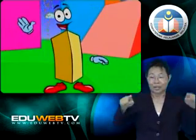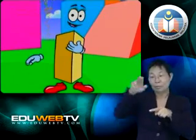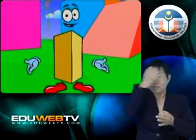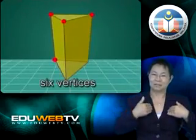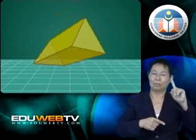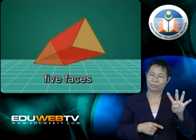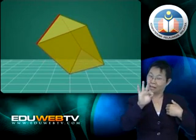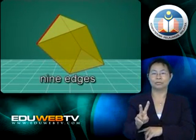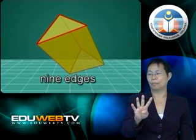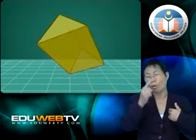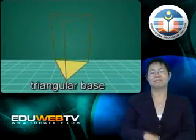Hello. I'm a triangular prism. They call me a triangular prism because my base is a triangle. Let me describe my features to you. I have six vertices. And I have five faces: one, two, three, four, and five. I have nine edges: one, two, three, four, five, six, seven, eight, and nine. I have only one base and it is triangular in shape.